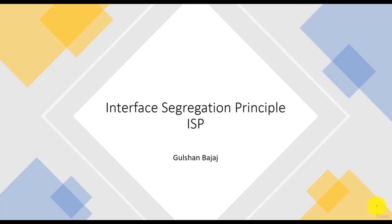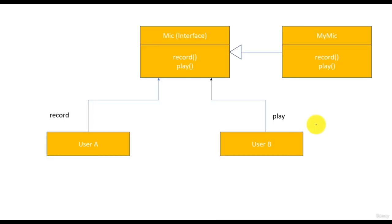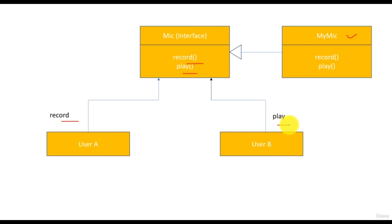Now let's discuss the interface segregation principle. Let us say we have an interface Mic representing a microphone. It includes two methods: one is to record the audio and the second one is to play the audio. Let us assume that this interface is implemented by a class myMic. There are two user classes — userA and userB. UserA uses the method record from the mic interface and userB uses the method play from this interface.